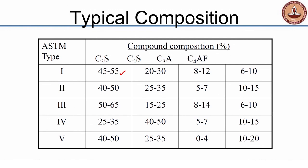Looking at the properties in terms of composition: Type 1 is ordinary Portland cement, where C3S is the primary constituent at about 50% or more. C2S is about 20 to 30%, roughly half that of C3S. C3A is 8 to 12% and C4AF is 6 to 10%.